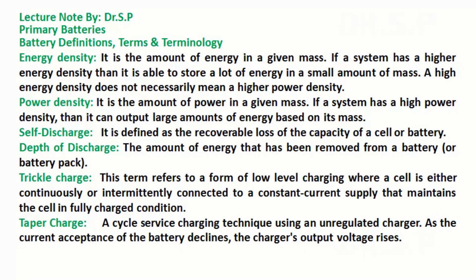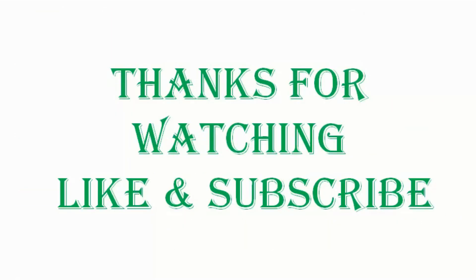Trickle charge: this term refers to a form of low-level charging where a cell is either continuously or intermittently connected to a constant current supply that maintains the cell in a fully charged condition. Taper charge: a cycle service charging technique using an unregulated charger, where as the current acceptance of the battery declines, the charger's output voltage rises.